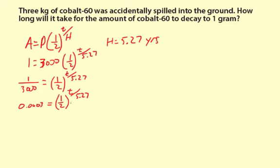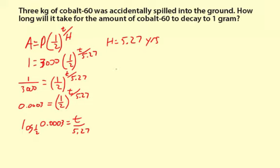In the last video, I showed how to solve this by taking log base one-half of both sides. This time I'm going to use a different method and rewrite it in logarithm form. This may seem a little cleaner, though also a little more complicated — if you don't follow it, you can use the other method too. So this becomes: log base one-half of 0.0003 equals t divided by 5.27. To solve for t, multiply both sides by 5.27, giving 5.27 times log base one-half of 0.0003 equals t.